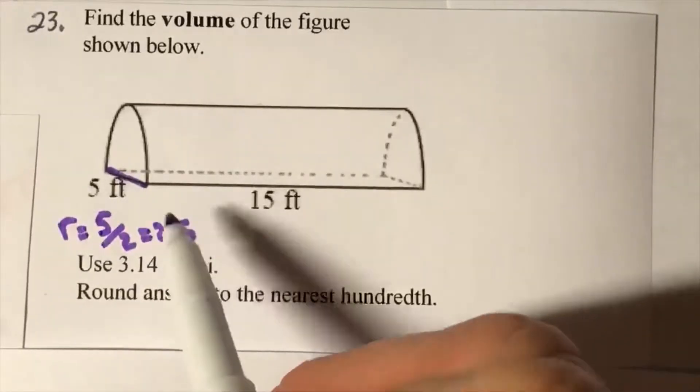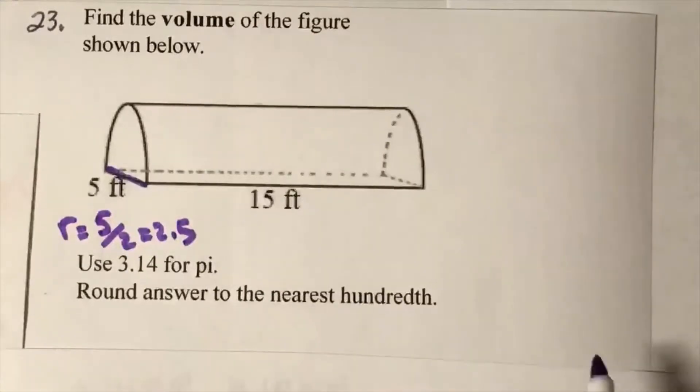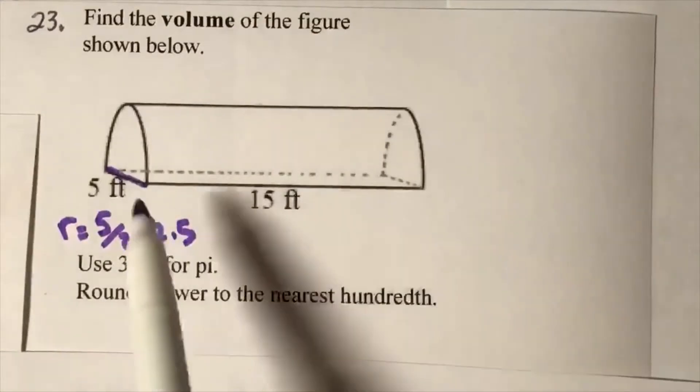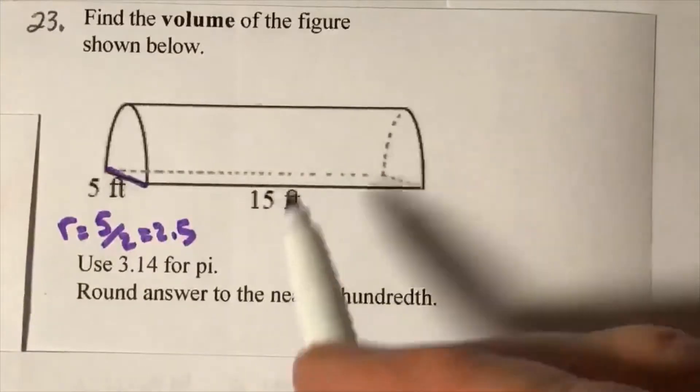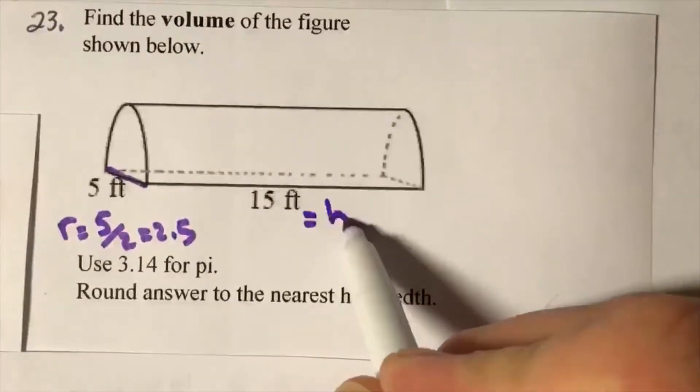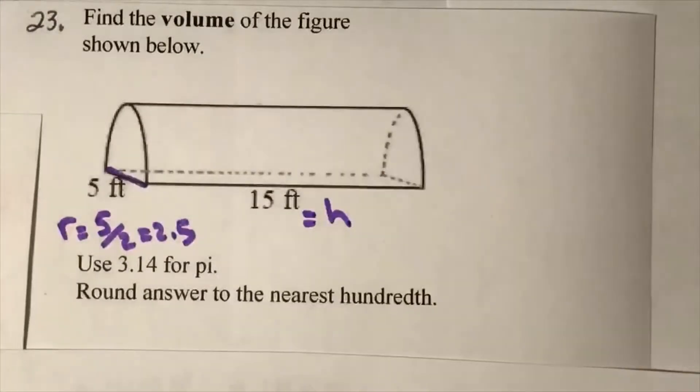The radius is 5 divided by 2, that's 2.5. And now the height—the height of the cylinder goes from the base to the base, right? So this is going to equal my height.